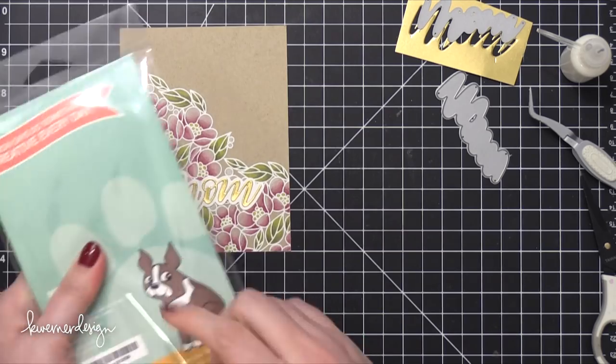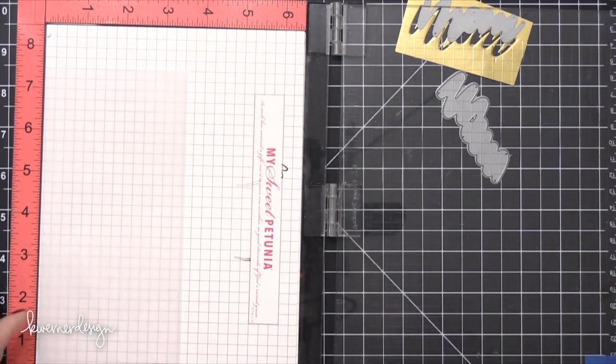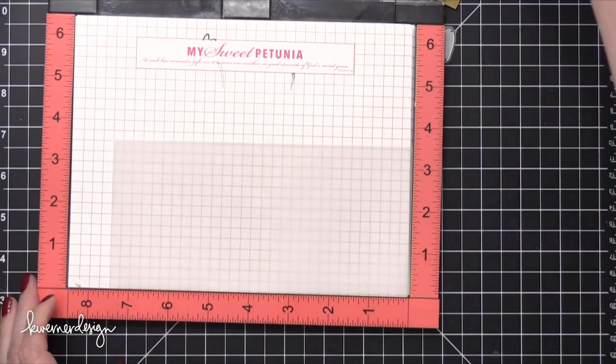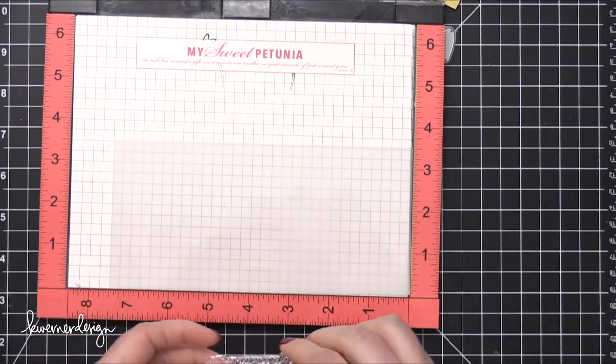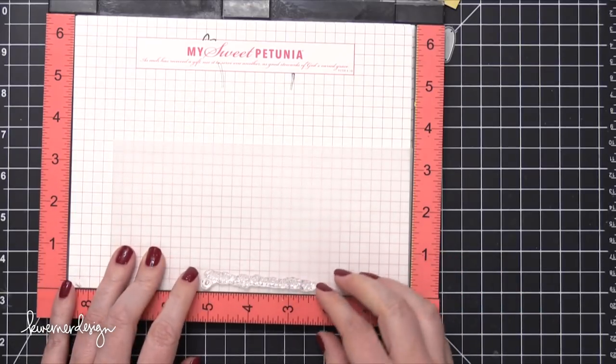I'm now using the Mom Flowers stamp set. This is also from that same release. And I'm going to take one of the really small greetings. This is actually my calligraphy on this stamp set. And I'm going to stamp it onto some vellum.